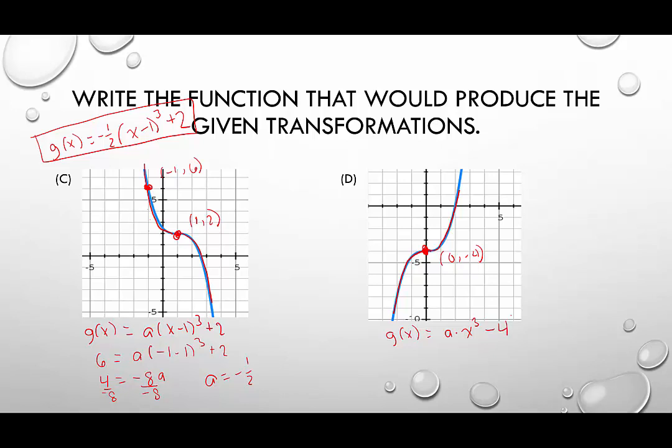Now we want to identify another point on the graph. And lucky for us, there's a really nice point right here at 2, 0. So what we're going to do is we're going to plug in 2 for x and 0 for g of x. And we're going to see what our a value is.